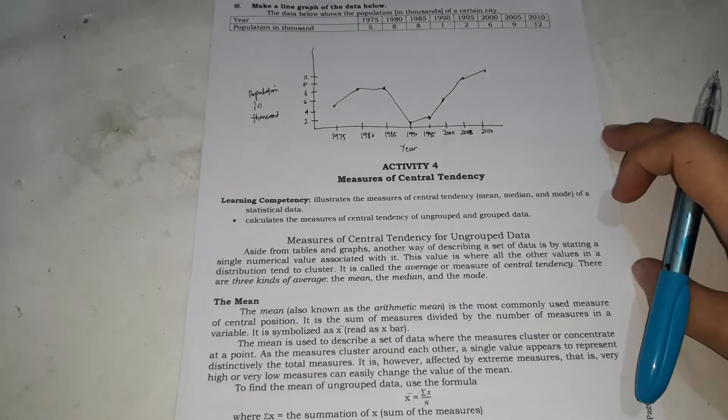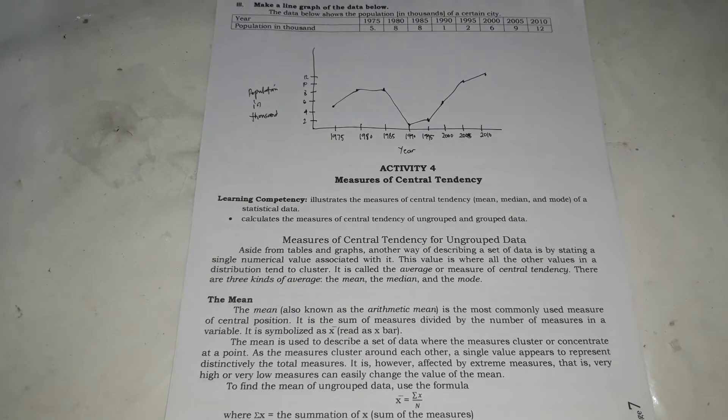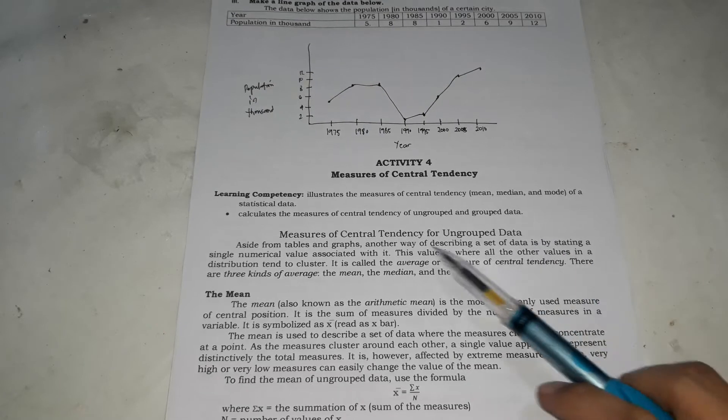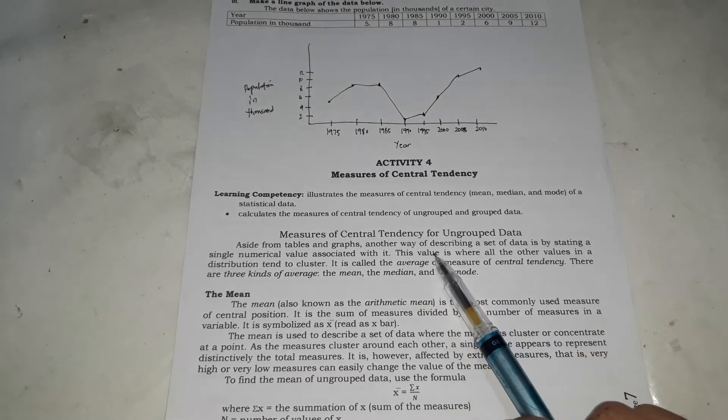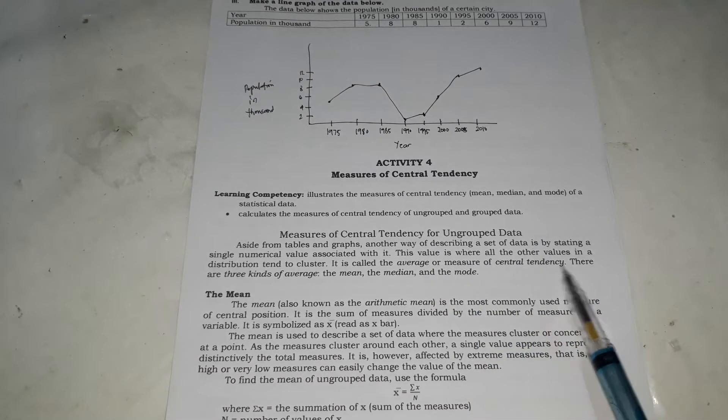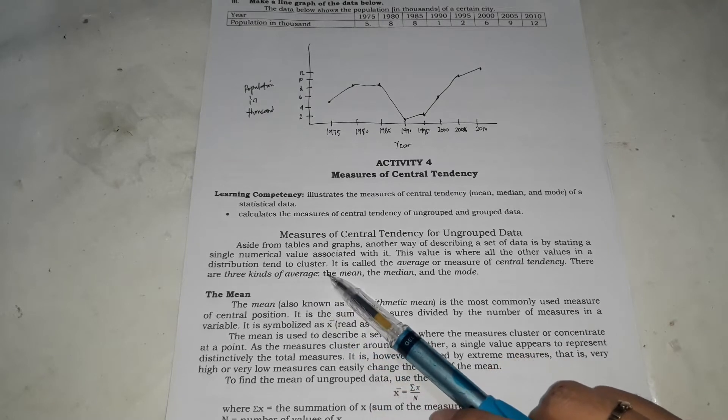Now we're going to talk about the measures of central tendency. The measures of central tendency, there are three measures: the mean, the median, and the mode. Measures of central tendency is the value where all the values in the distribution tend to cluster.